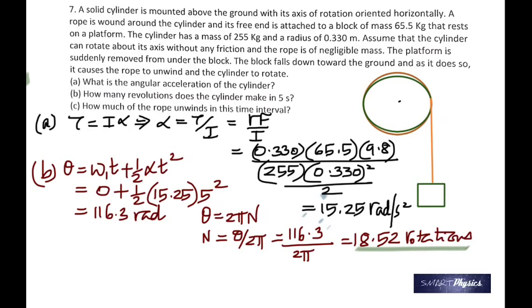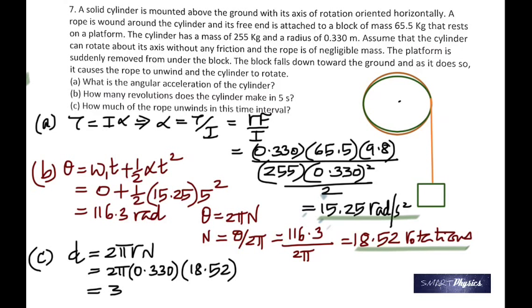And then the last part says how much of the rope unwinds. That means you've got to find the linear displacement, the length of the rope. It's a length. How do you find that? The length that it's going to unwind in one rotation is the circumference. Since it makes n rotations, the total length is the circumference multiplied by the total number of rotations. So that's why you have the formula circumference 2 pi r times n, which is 38.40 meters.